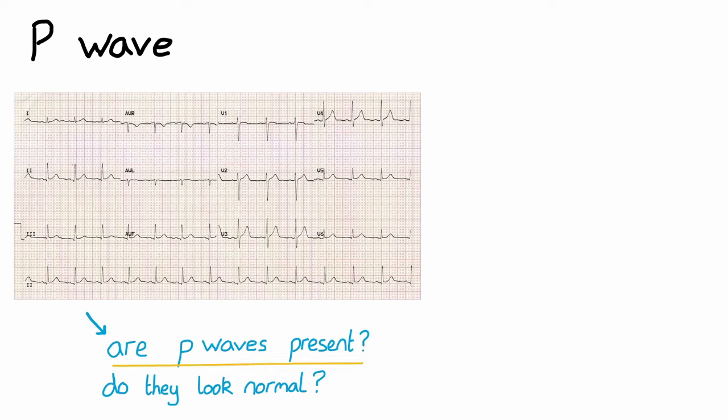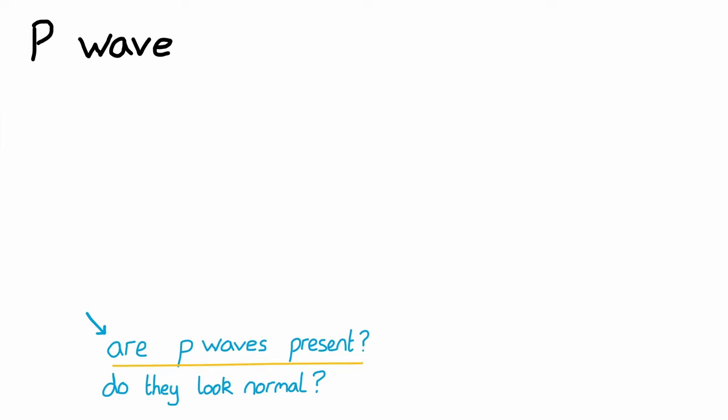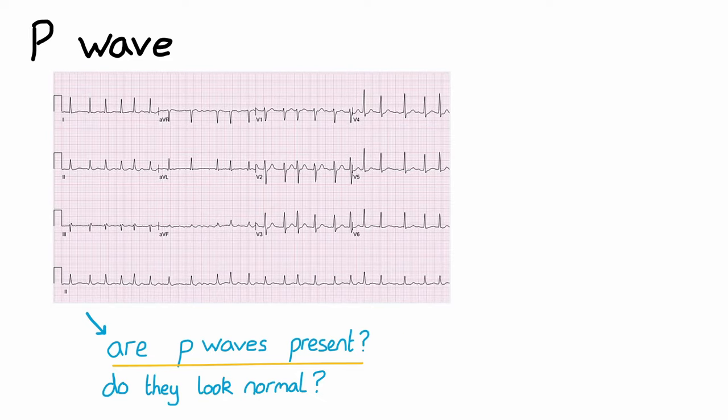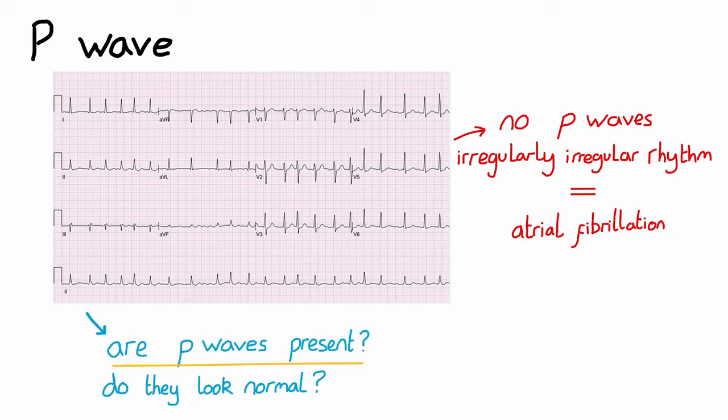Regarding the first question, P waves should precede every QRS complex. The complete absence of P waves with an irregularly irregular rhythm leads us to the diagnosis of atrial fibrillation. This is a very common ECG in medical school exams and also in clinical practice, so it's good to get familiar with what this looks like.